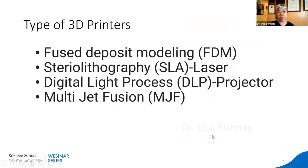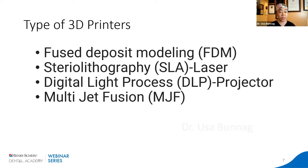There are different types of 3D printers. You have Fused Deposit Modeling, or FDM, which you just saw. You have Stereolithography, or SLA, which uses a laser — as seen in Formlabs. You have Digital Light Processing, or DLP — that's SprintRay. And you have Multi-Jet Fusion, or MJF.